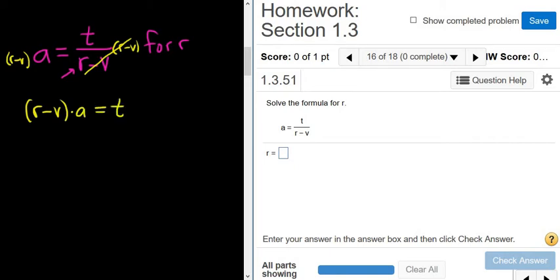And we're looking for r. So it's tempting to distribute, and you can distribute the a, but it's easier in this case to divide by a. And so when you divide by a, you get r minus v equals t over a. See, the whole thing here is being multiplied by a, so to get rid of the a, you divide.